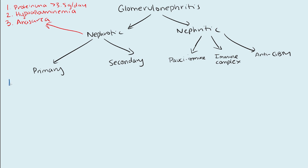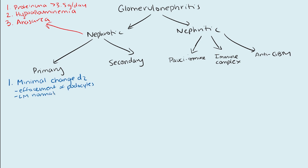The causes of primary nephrotic syndrome: the first one is minimal change disease. A lot of times on test questions it's going to be presenting in kids, because this is most commonly seen in kids, but it can happen in adults too. On electron microscopy you'll see effacement of podocytes, and light microscopy is normal — that's why it's called minimal change disease. Treatment is going to be glucocorticoids.